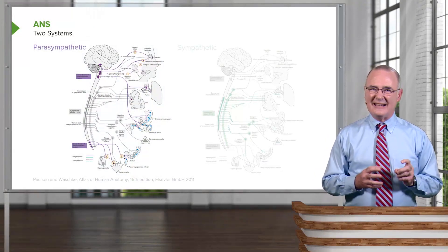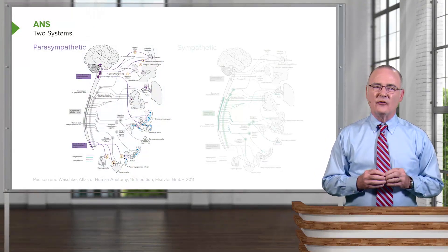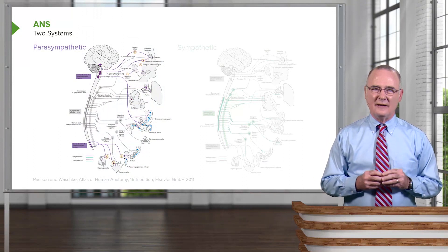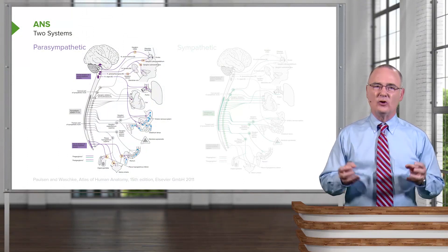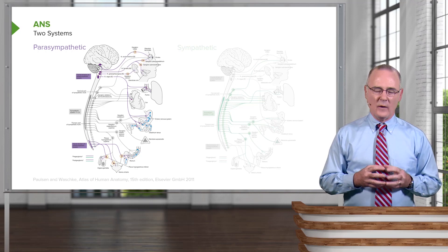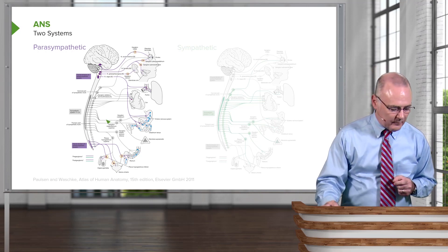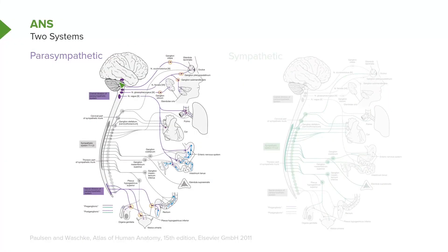The first aspect about the autonomic nervous system that I want you to understand is it's comprised of two systems. We have the parasympathetic system, and you see the structures in purple. Various nuclei and cranial nerve nuclei contribute to this system, and then you see the nerve fibers of the nerves that also contribute to the peripheral distribution of this system.